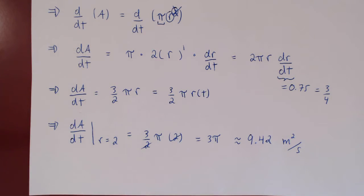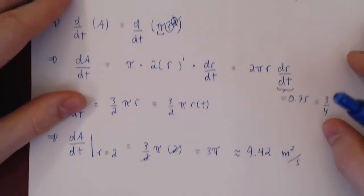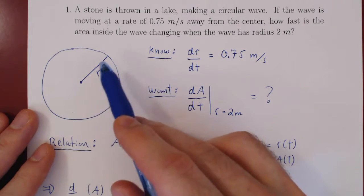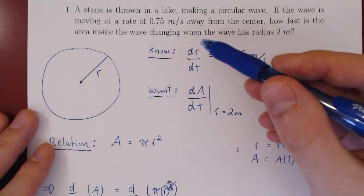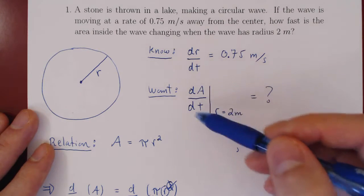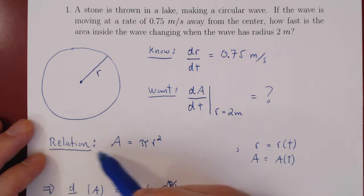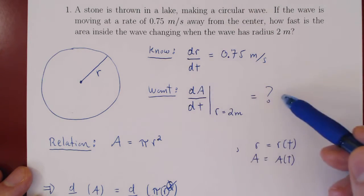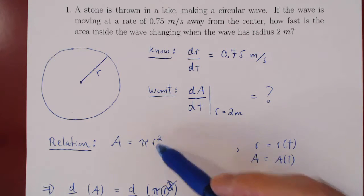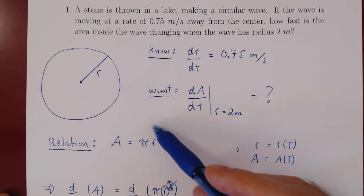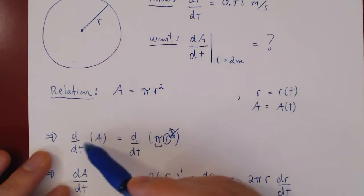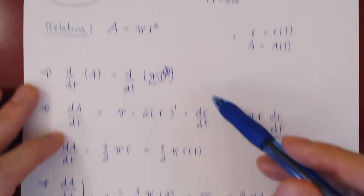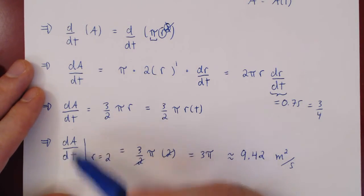Even though this is a simple-looking problem, every other problem will be tackled in the same way. Visualize the picture and the situation. Label the variables. Write down what you know and what you want using derivatives. Find a relation involving the variables you know and the ones you are looking for. Once you have the relation — usually functions of t — differentiate both sides with respect to t. Then isolate for the rate of change you are trying to find. And that's basically it.